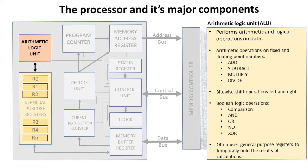The arithmetic logic unit, as its name suggests, is the location inside your processor that performs arithmetic and logical operations. In terms of arithmetic, it performs add, subtract, multiply, and divide on fixed and floating point numbers, and it can perform bytewise shift operations left and right. For logical comparisons it can perform ANDs, ORs, NOTs, and XORs. It often makes regular use of the general purpose registers to temporarily hold the results of calculations.